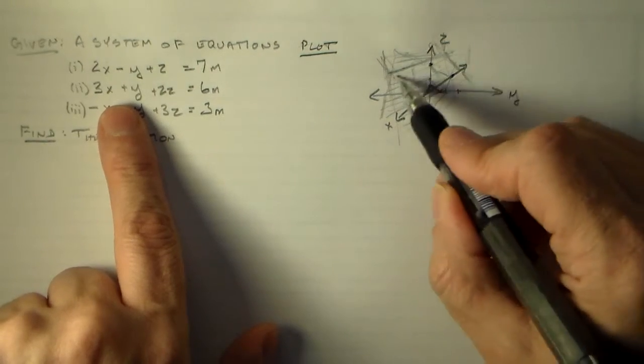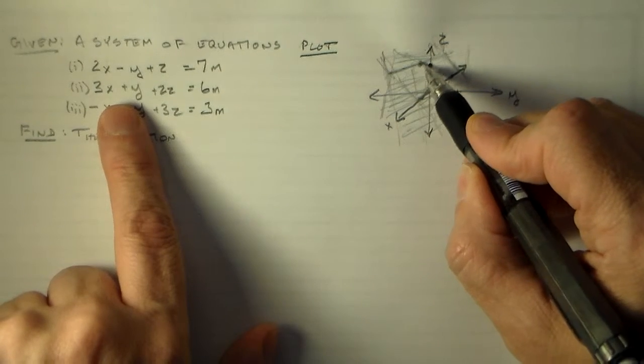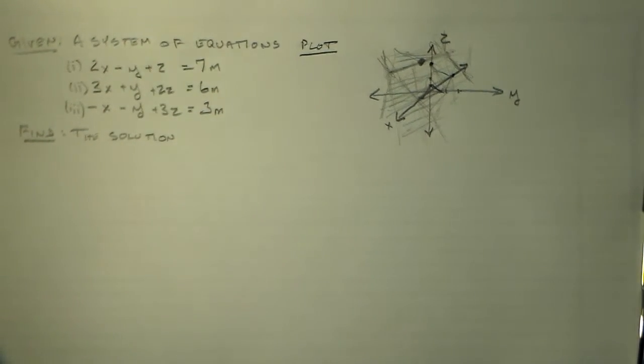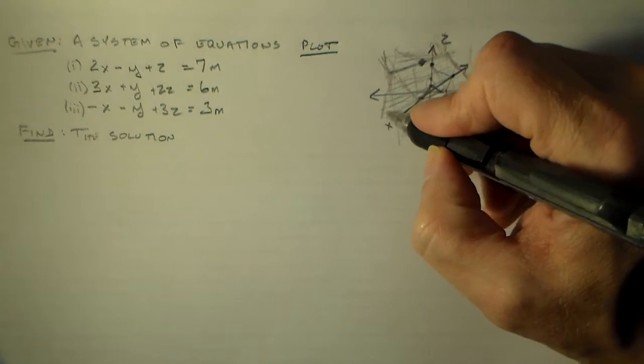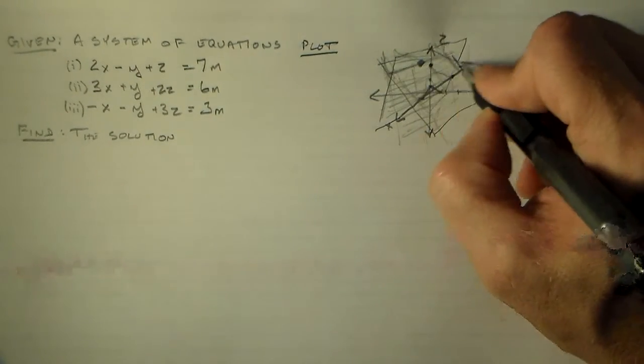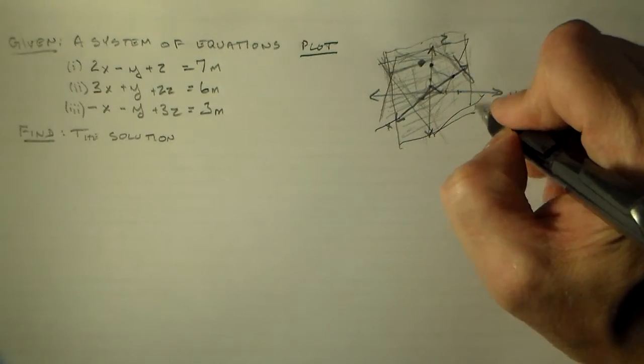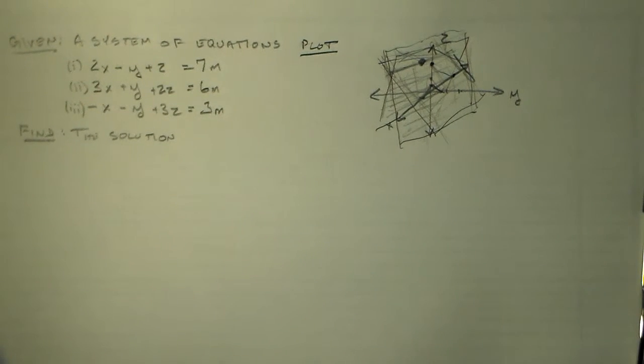So, we've got this guy, this guy, coming sort of down around that way, like that. So, we've got one plane going this way, one plane going this way. And I think they meet somewhere around here. Right. So, we're trying to find the point where all three of these planes meet. That's the solution.